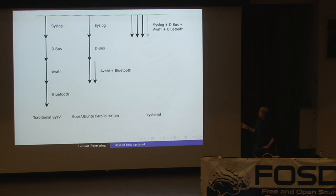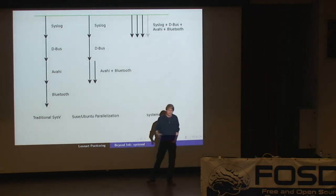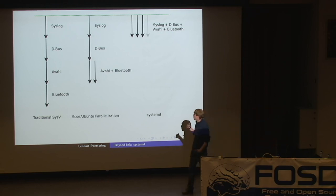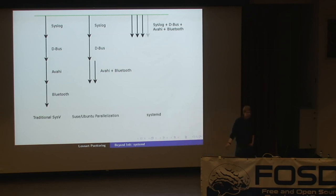A couple of people looked at this and said: the ordering between syslog, dbus, and Avahi we can't do much about, nor the one between syslog, dbus, and Bluetooth. But we could do something about the ordering between Avahi and Bluetooth — because they can be started in parallel, we should start them in parallel. This is the middle kind of parallelization: syslog and dbus are still started one after the other, and then Avahi and Bluetooth are started afterwards but at the same time. This is how Upstart works and how the updated classic System V boot process works. It's an improvement — traditional System V took like four time-arrows and this one just takes three, so it's a little bit faster. But it's not as good as what we do in systemd.